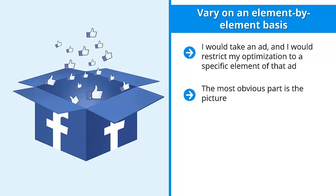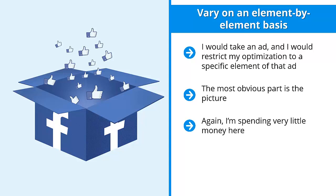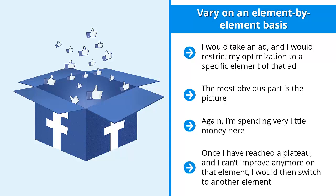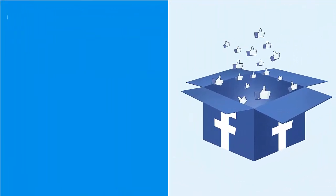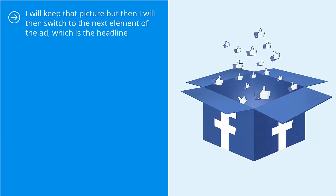The most obvious part is the picture, so play around with different pictures and see which gets the most clicks. Come up with a variation of the best-performing picture and see if you can improve your click-through rate further. Spend very little money — you just want to see improvement in click-through rate for that element. Once you've reached a plateau and can't improve any more on that element, switch to another. For example, in a campaign for dog food, if your best-performing picture is a smiling chihuahua, keep that picture and move to the next element.